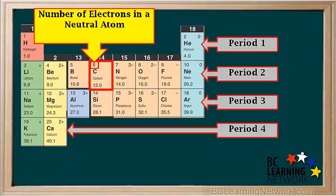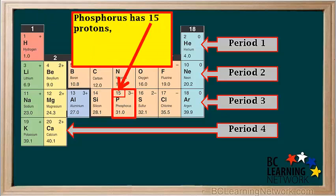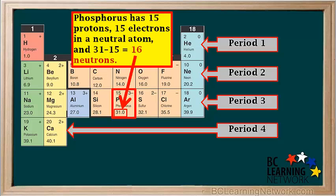Protons are positive and electrons are negative. In a neutral atom, the number of electrons is equal to the number of protons. So the atomic number on the top left also gives us the number of electrons in a neutral atom. For example, the number of electrons in a neutral carbon atom is equal to 6. Phosphorus has 15 protons, 15 electrons in a neutral atom, and 31 minus 15 equals 16 neutrons in its most common form.